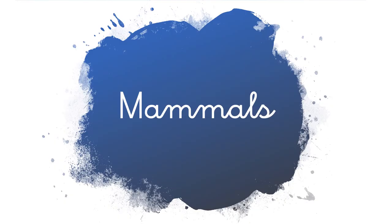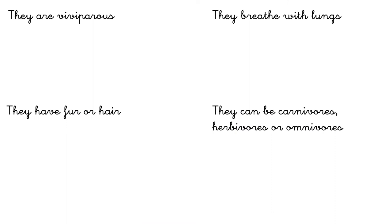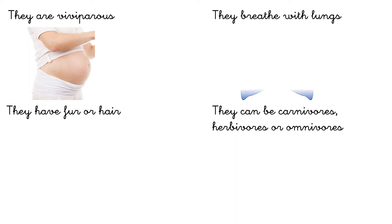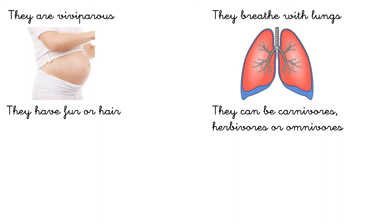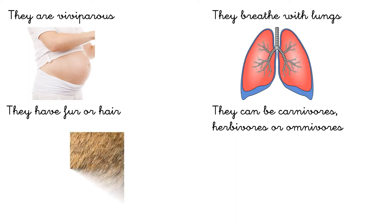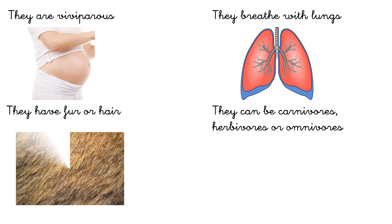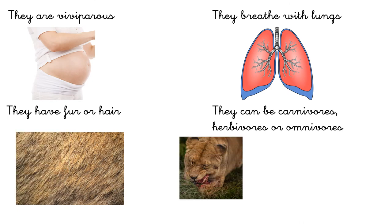We are going to start with mammals. Mammals are viviparous, it means that they are born from a mummy's womb. They breathe with lungs, and they have fur or hair. They can be carnivores if they eat animals,